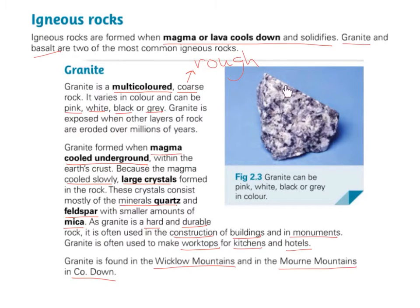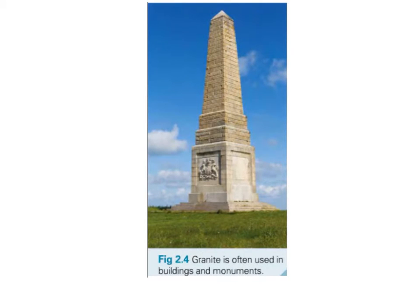Here's a photograph of a piece of granite. It can be pink, white, black or grey in colour. Granite is often used in buildings and monuments — here's a monument made of granite.